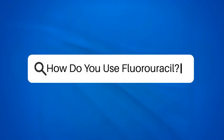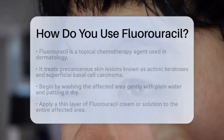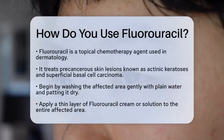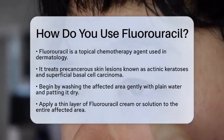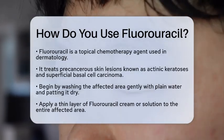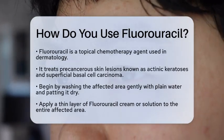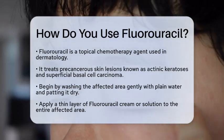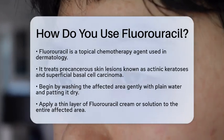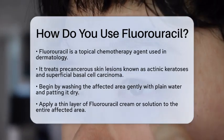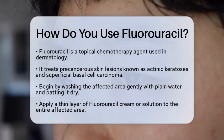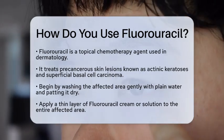If you are curious about how to use fluorouracil for skin treatments, you are in the right place. This medication is a topical chemotherapy agent primarily used in dermatology. It treats precancerous skin lesions called actinic keratoses and certain superficial skin cancers like superficial basal cell carcinoma. Let's break down how to use it effectively.